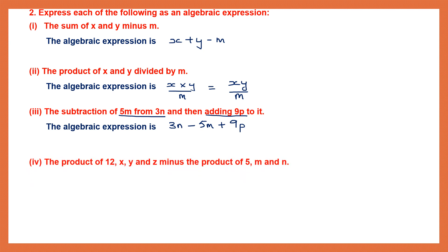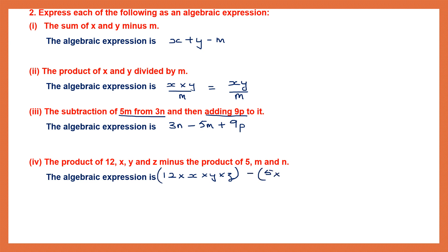Question 4: The product of 12X, Y, and Z minus the product of 5M and N. Product means multiplication: 12 × X × Y × Z − 5 × M × N. Removing all multiplication signs gives us 12XYZ − 5MN.